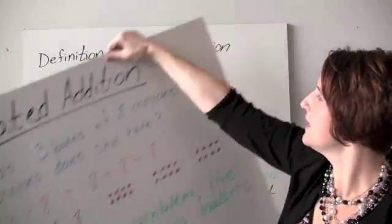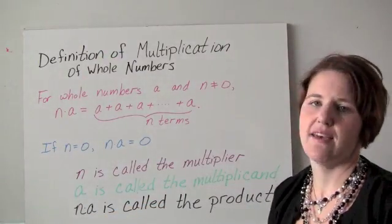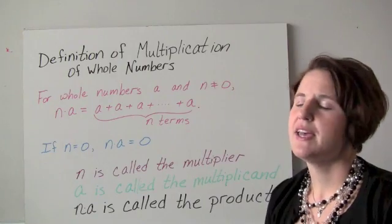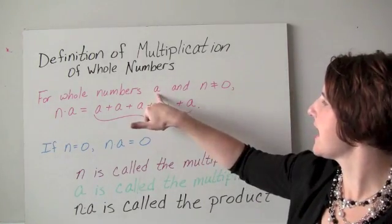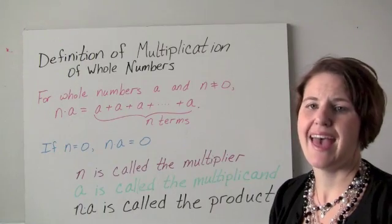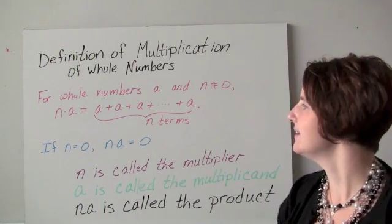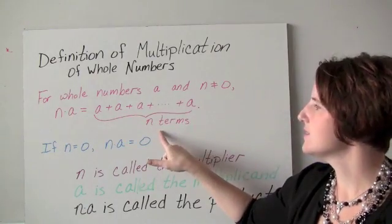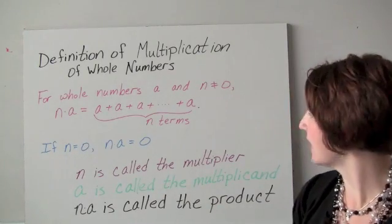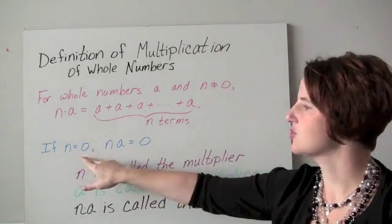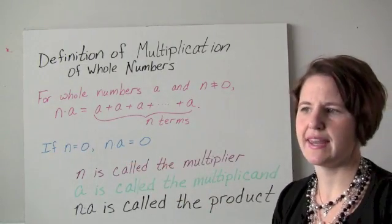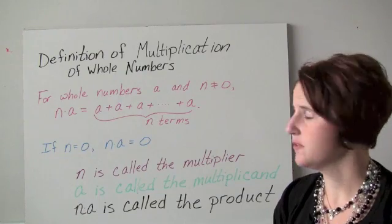Here's a definition for the multiplication of two whole numbers: if we have two whole numbers a and n, and n is not equal to zero, then n times a is a plus a plus a, where the total number of terms is n — we're adding a up n times. If n equals zero, then n times a equals zero, because we're not adding it at all.